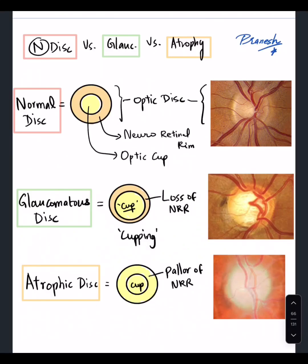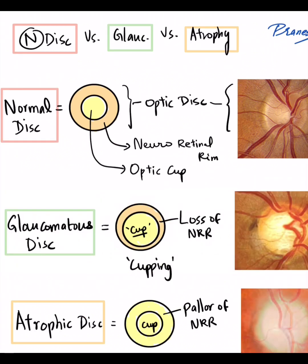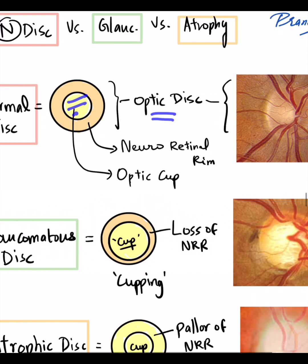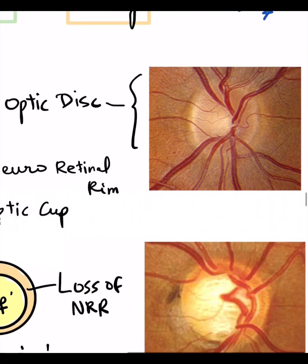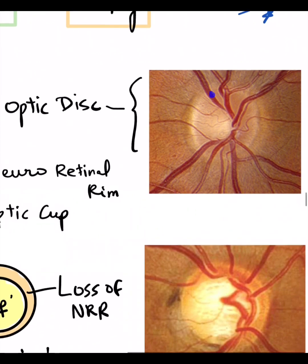Let us understand the differences between a normal disc, a glaucomatous disc, and an atrophic disc — very fundamental, yet very important. A normal optic disc is characterized by the central pale optic cup and the surrounding orangish neuroretinal rim. As you can see in this picture, you have a central small area of the optic cup, which is pale, surrounded by the neuroretinal rim.